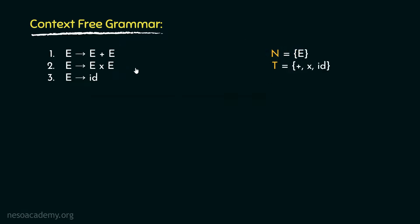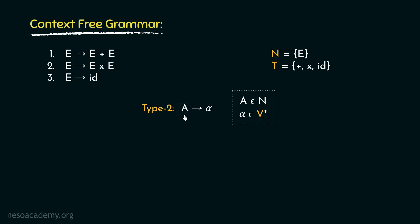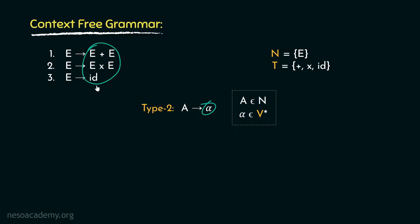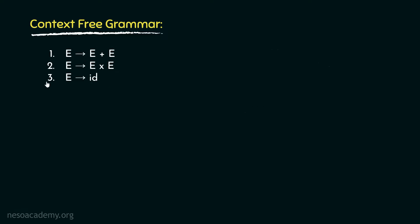Now we have claimed that this is a context-free grammar — let's verify that. In the previous session, we learned that a context-free or type 2 grammar is of the form A can be rewritten as alpha, where A belongs to N and alpha belongs to V-star, which is any combination of non-terminals and terminals including epsilon. Basically, the left-hand side of every production must have only one non-terminal. In the LHS of all three rules, we have only a single non-terminal that is E. On the right-hand side, the production rules have alpha — any combination of non-terminals and terminals — which is exactly the case here. So now we are certain that this is a context-free grammar.